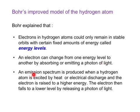An emission spectrum is produced when a hydrogen atom is excited by heat or electrical discharge. And the electron is raised to a higher energy level. The electron then falls to a lower level by releasing a photon of light.